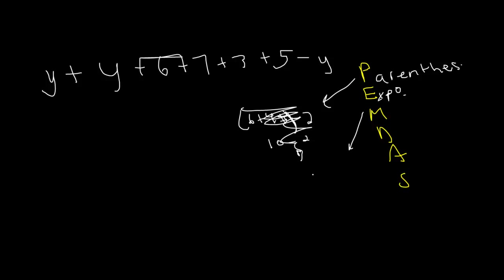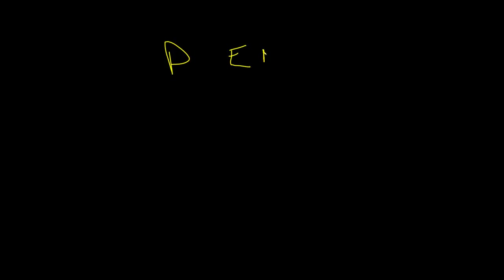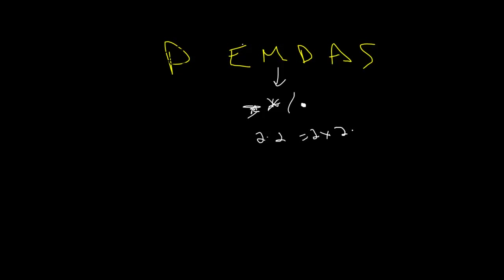Exponents are next — basically things like x squared, or for example 2 squared plus 4: we do 2 squared which is 4, then 4 plus 4 equals 8. Also, for the record, in pre-algebra one way of writing multiplication is a little dot. So 2 dot 2 is the same as 2 times 2, which equals 4.